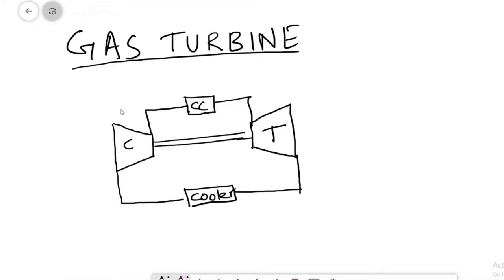This is called the closed type gas turbine. The direction of flow is: from the compressor to the combustion chamber, from the combustion chamber to the turbine, from the turbine to the inner cooler, and from the inner cooler back to the compressor. Also note that the compressor uses a convergent type duct and the turbine uses a divergent type duct.